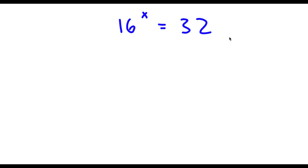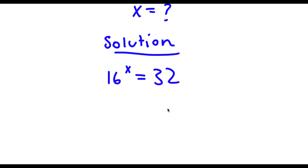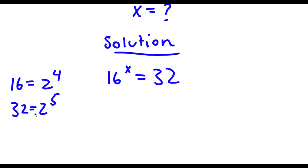Alright, so I have 16 to the power of x is equal to 32, and I want to find the value of x. So 16 is the same thing as 2 to the power of 4. And 32 — since we want to make both of these the same base — I need to find what power of 2 makes 32. Well, 2 to the power of 5 is double of 16, and double of 16 is 32, so 32 equals 2 to the power of 5. So now replacing 16 with 2 to the power of 4 and 32 with 2 to the power of 5, I get 2 to the power of 4 to the power of x is equal to 2 to the power of 5.